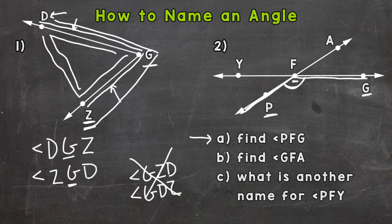Now let's go to B. See if you can find angle GFA. So we start at G, we go to our vertex F, and then up to A. So angle GFA would be right here.